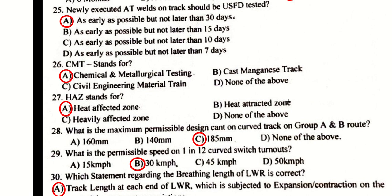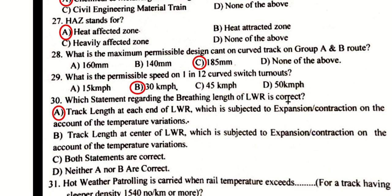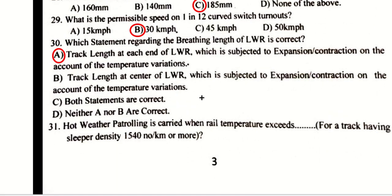HAZ means Heat Affected Zone. The maximum permissible design cant on curved track on Group A and B routes is now 185 mm. The permissible speed on 1 in 12 curved switch turnout is 30 kmph.